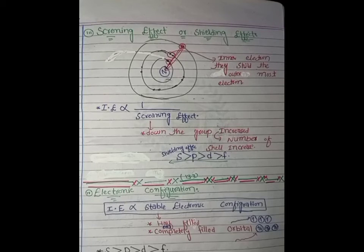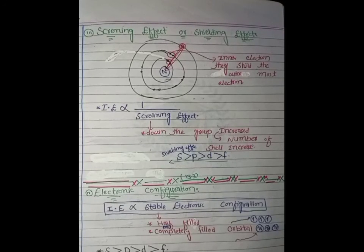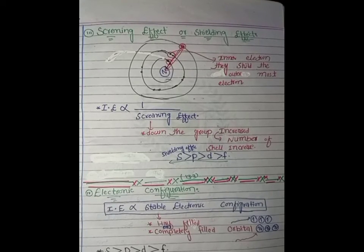As the group number increases, the number of inner shielding electrons increases. So the screening effect increases, the nucleus holds the outer electrons less strongly, and therefore ionization energy decreases. Ionization energy is inversely proportional to the screening effect or shielding effect.